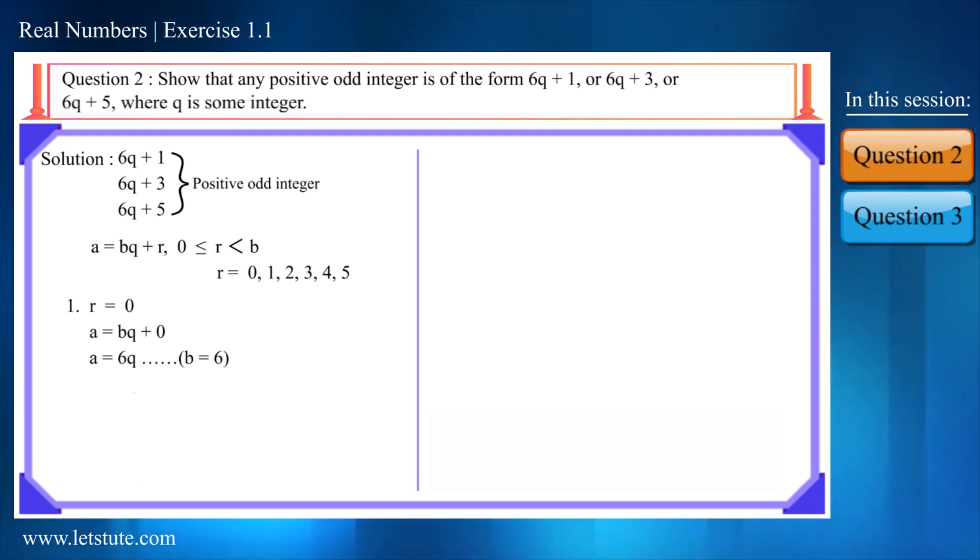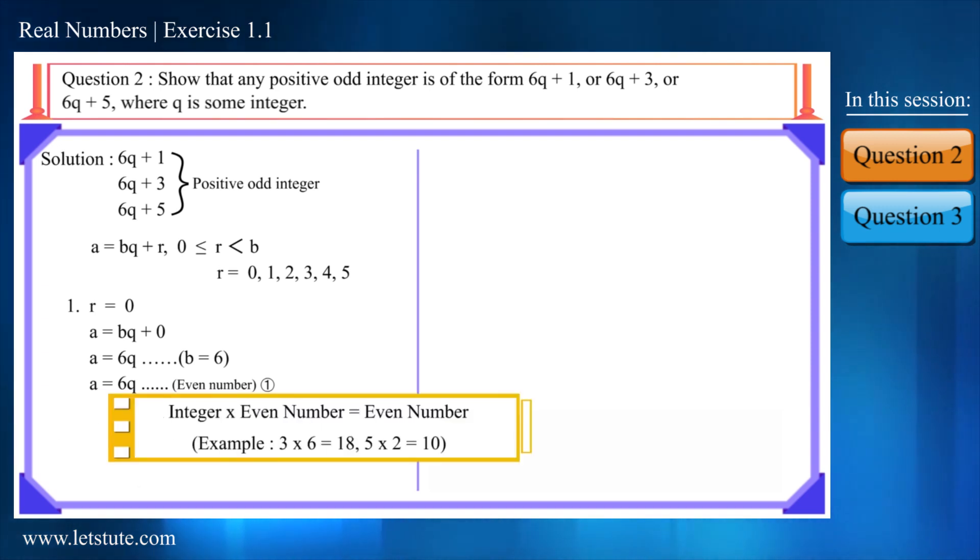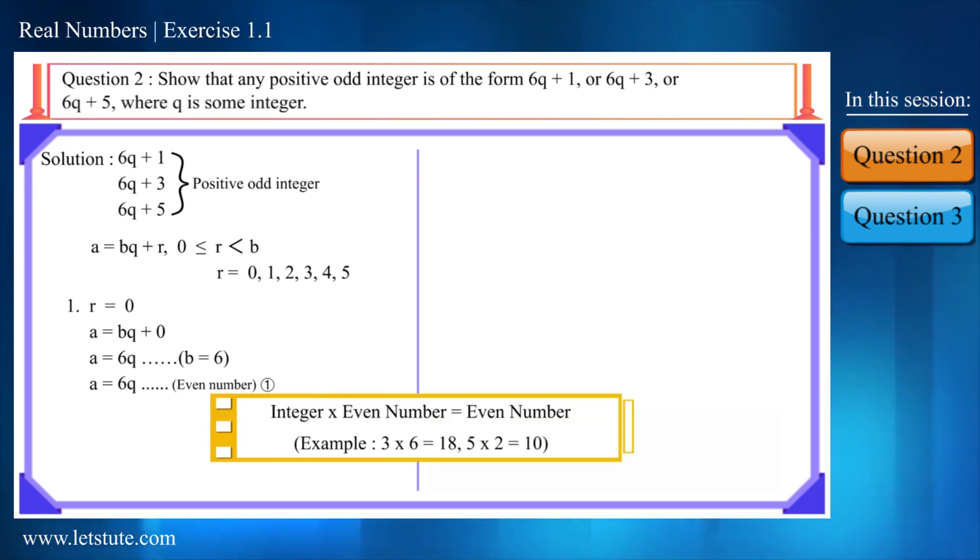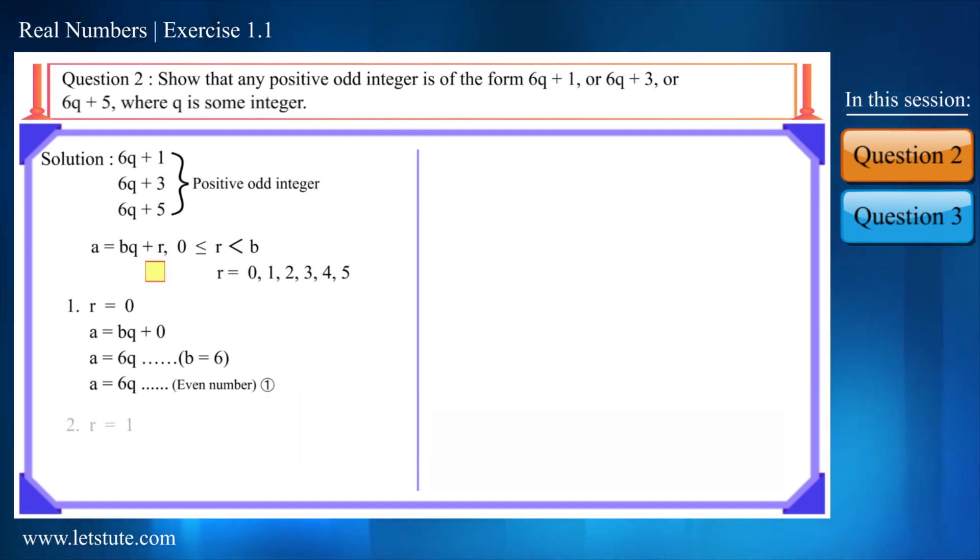In these numbers the value of b is 6. Therefore, it will be 6q which is an even number because we know that if we multiply integer with any even number we always get an even number. And if we substitute the value of r equal to 1.